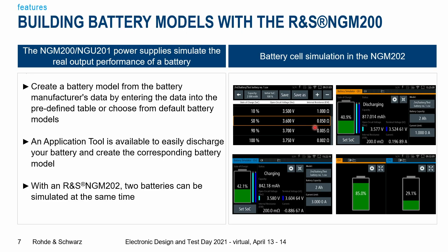Another method is to use your real battery connected to the NGM. We have an application tool available that will completely discharge your battery, and out of this data will create a unique battery model for your specific battery. Once you have loaded the battery into the power supply, you will get a screen showing all the different battery characteristics in one graphical interface.